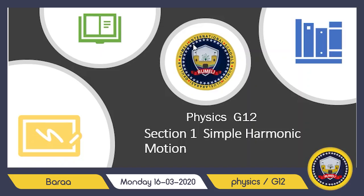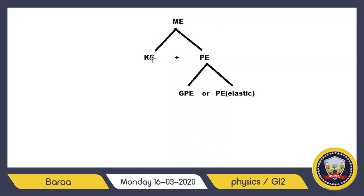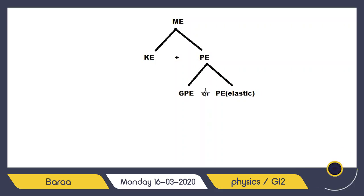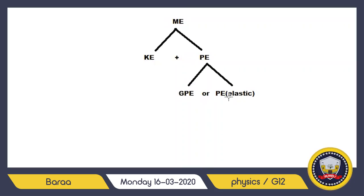Today we will start with the first section in Chapter 11: Simple Harmonic Motion. Before we start, we need to revise something from the first semester. Mechanical energy is equal to kinetic energy plus potential energy. Kinetic energy depends on velocity and equals one-half mv squared. Potential energy can be gravitational potential energy, equal to mgh, or elastic potential energy, which we will explain today.